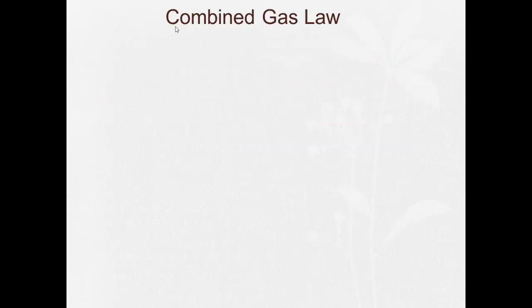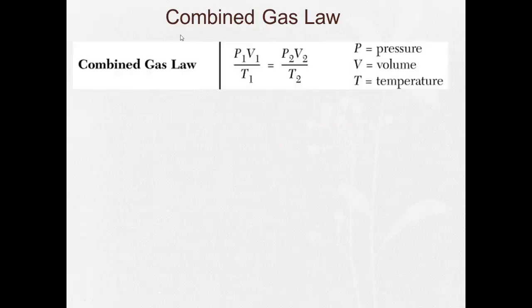Now we're ready to take a look at the combined gas law. And if you look in your reference table T, the combined gas law is P1V1 over T1 equals P2V2 over T2. P is pressure, V is volume, T is temperature. And these are on table T, the back page of your reference table. We're going to have to know relationships between things like pressure and temperature, or volume and temperature, or pressure and volume.